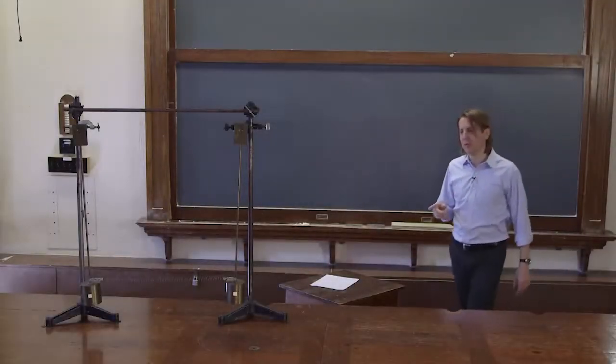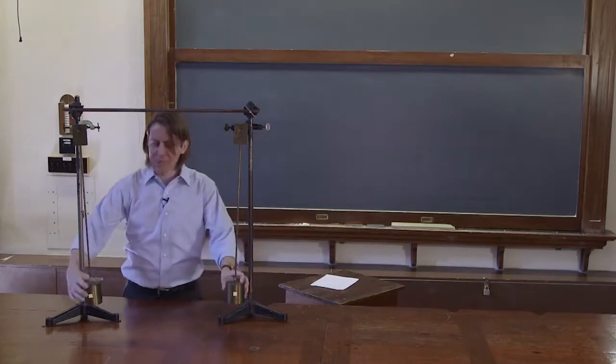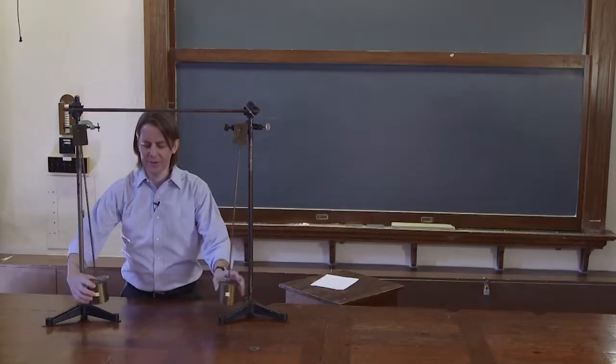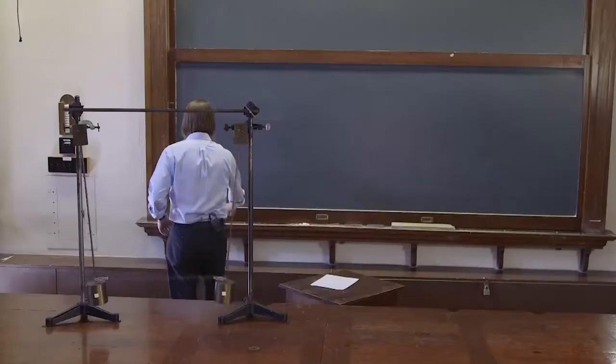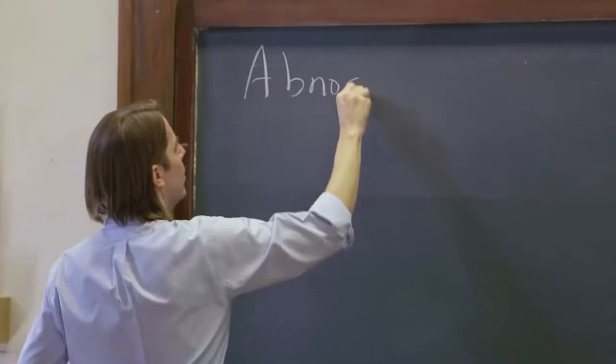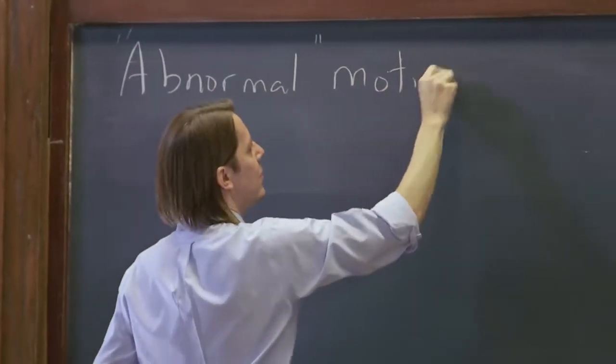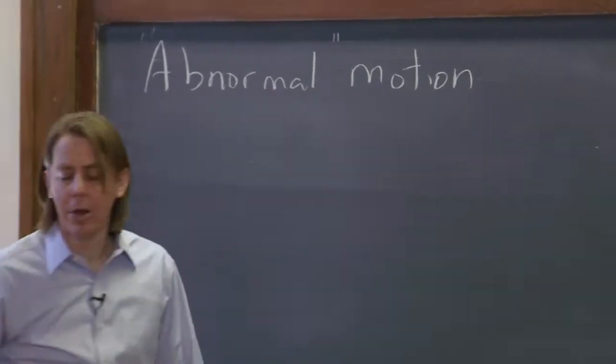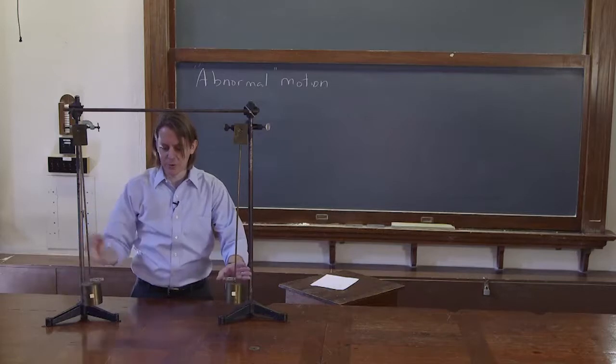So we've described the normal modes of these coupled pendulums, but we also want to be able to describe any motion of the coupled pendulums. Anything they might want to do, we want to be able to describe. So now, let's think about what I'll call an abnormal motion, which basically just means any motion other than a normal mode. Let's see, the one we actually want to describe, we'll start with something simple.